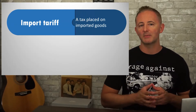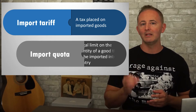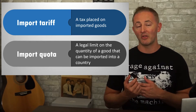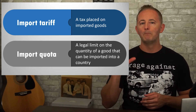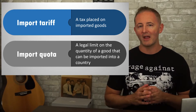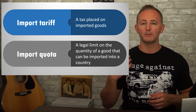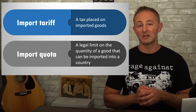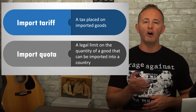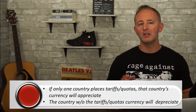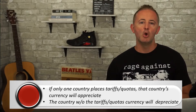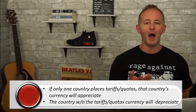Tariffs and quotas will also affect supply and demand for foreign currencies. An import tariff is a tax placed on foreign goods, and an import quota refers to a legal limit on how many goods from another country can be imported. Both of these policies will reduce demand for the foreign currency, and in turn reduce the supply of the domestic currency since there will now be fewer purchases of those foreign goods. So if only one country imposes these policies, we'd expect the domestic currency to appreciate and the foreign currency to depreciate.